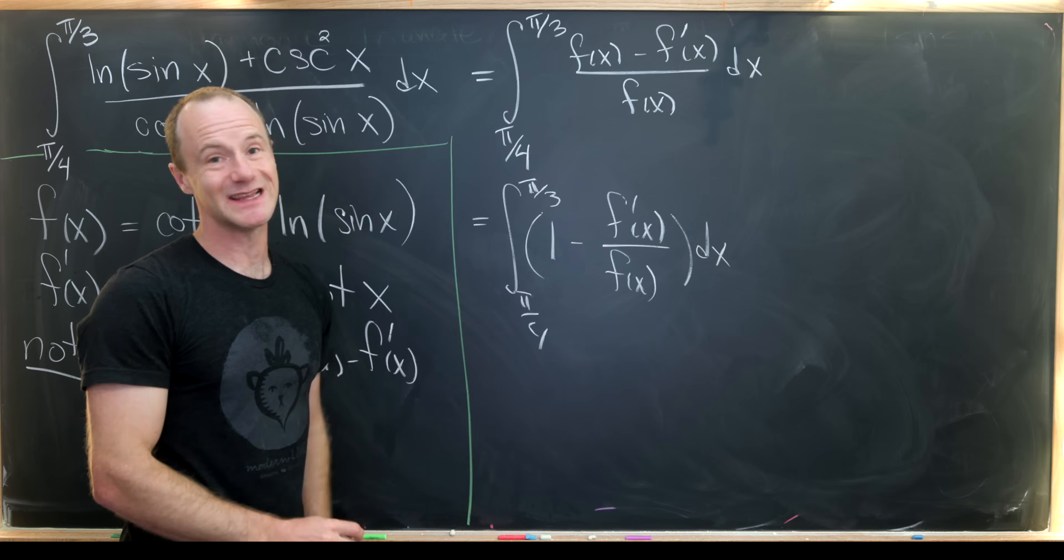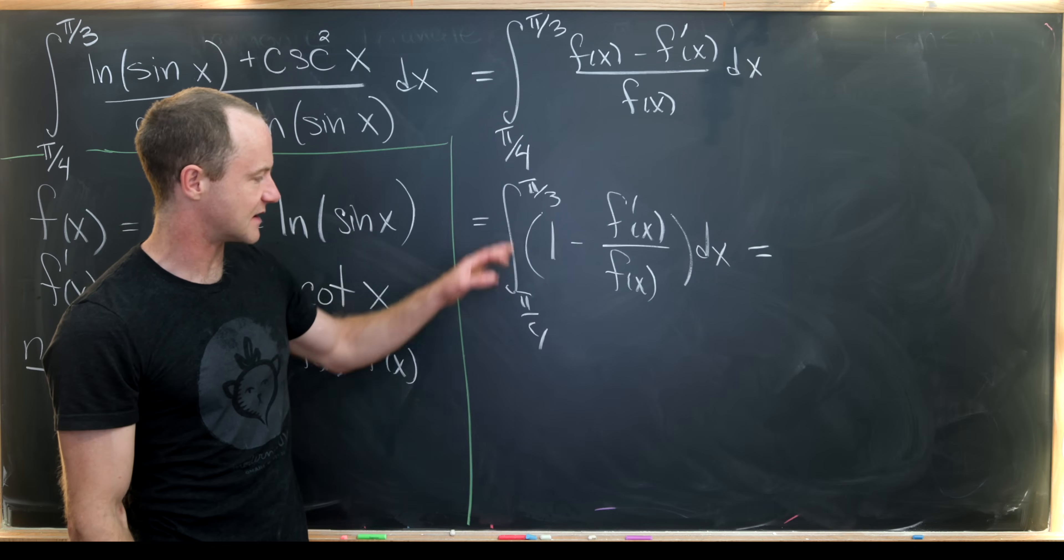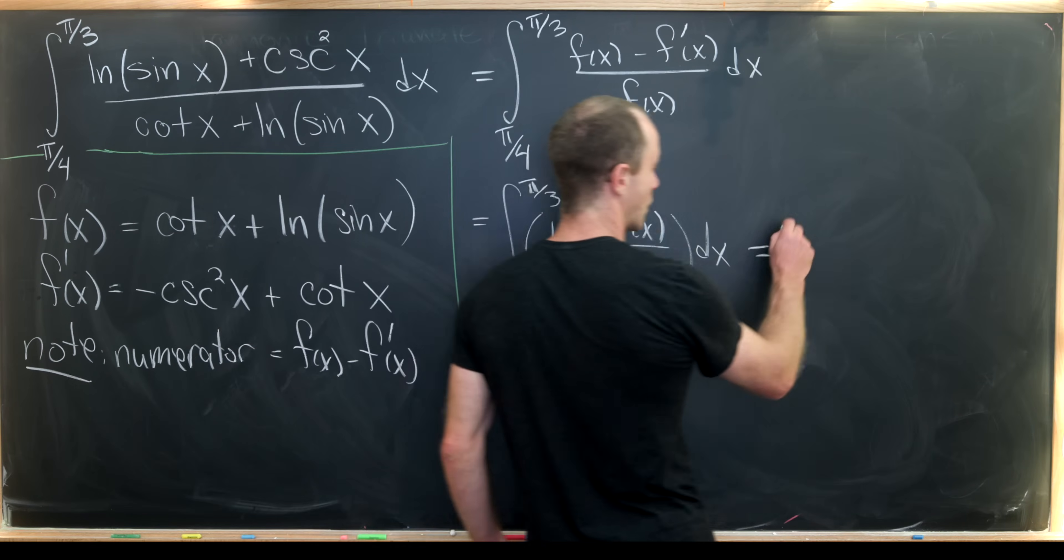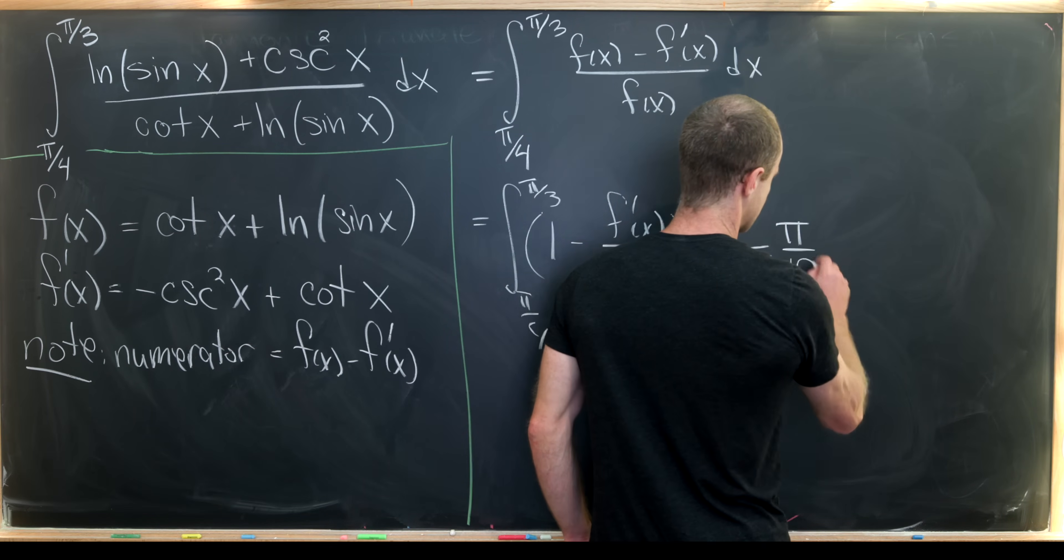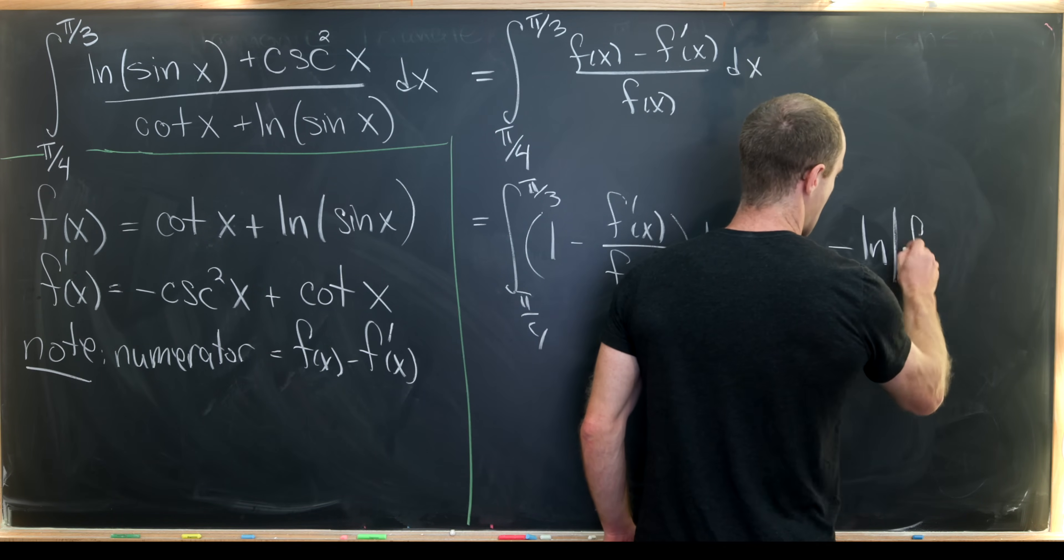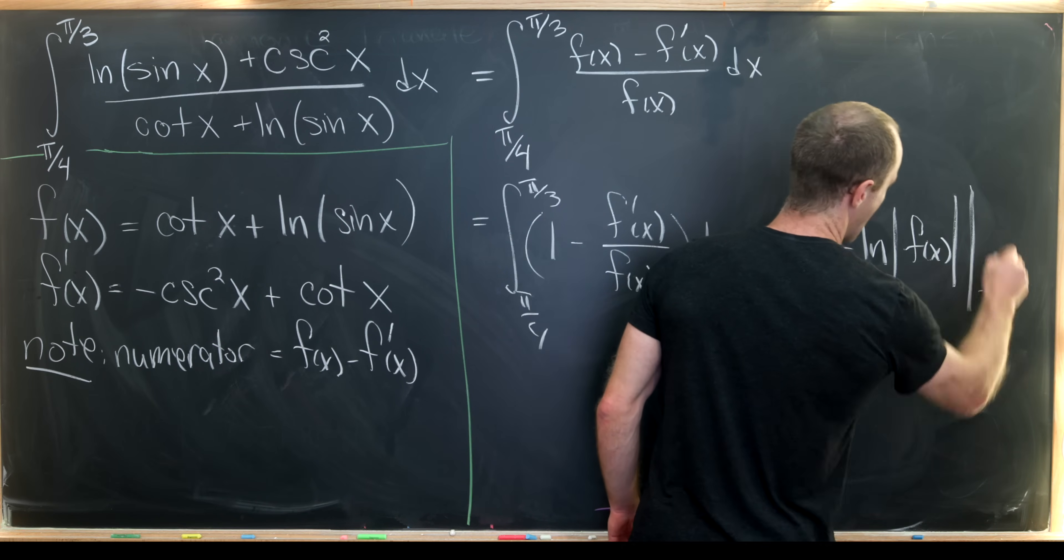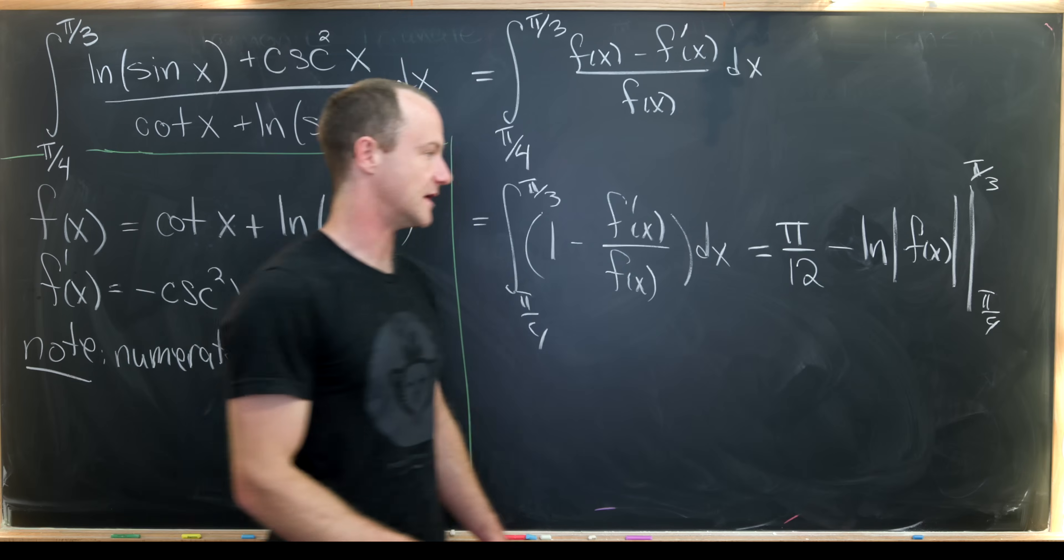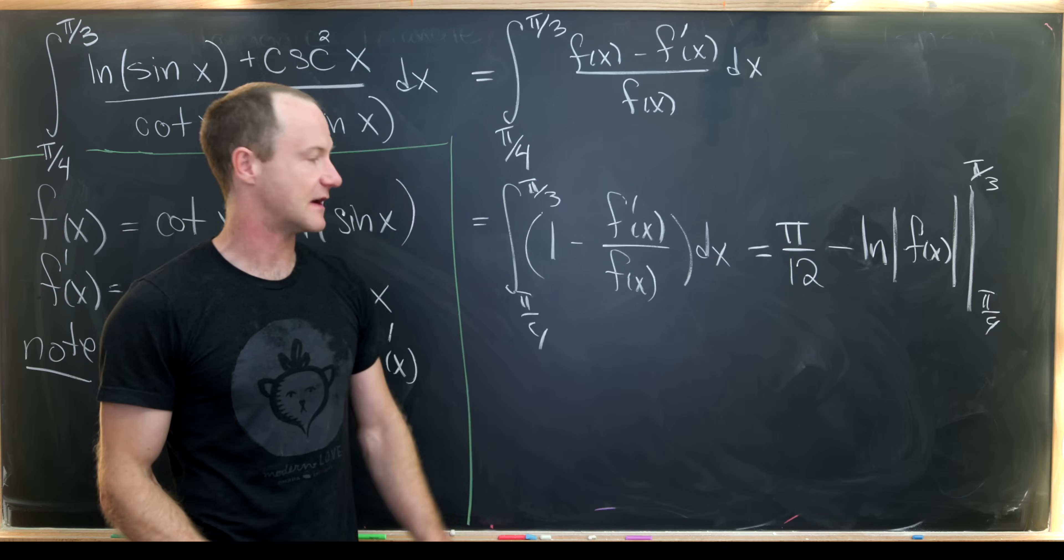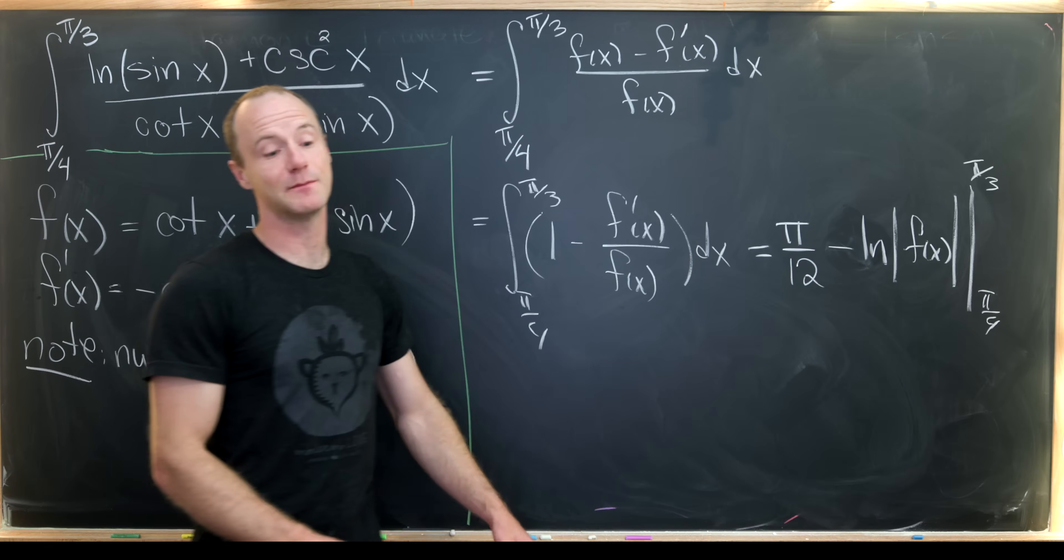Now each of these are easily integrable. So the number one integrates out to x, we evaluate that at π/3 and π/4 and subtract. Well, π/3 minus π/4 is π/12. So I'll just write that here. So we have π/12. And then from there, we have to subtract the natural log of the absolute value of f of x, where we evaluate that from π/4 to π/3. Again, keep in mind that if we take the derivative of the natural log of f of x, we get f in the denominator and f prime in the numerator, again, by the chain rule.